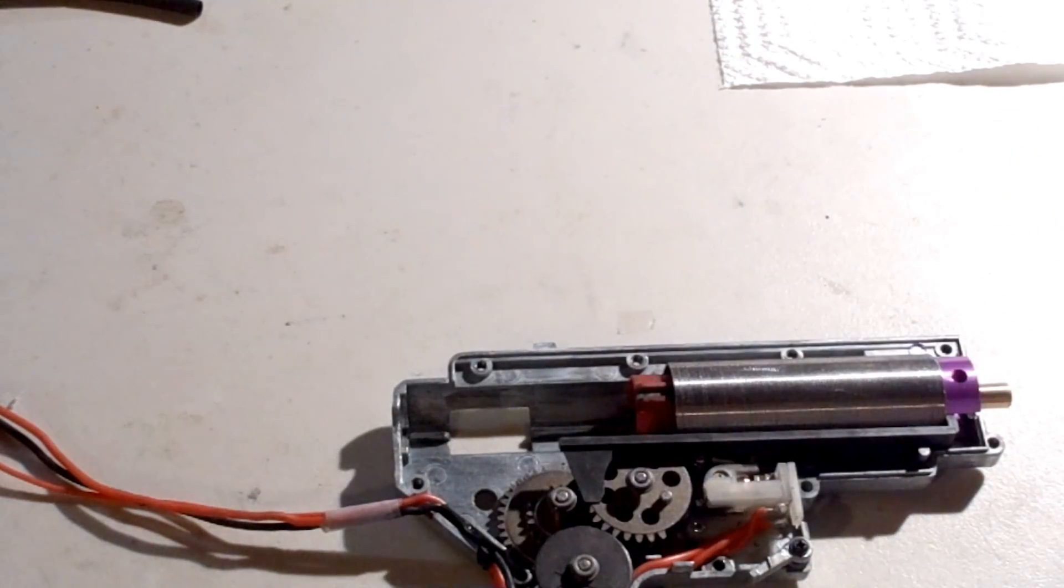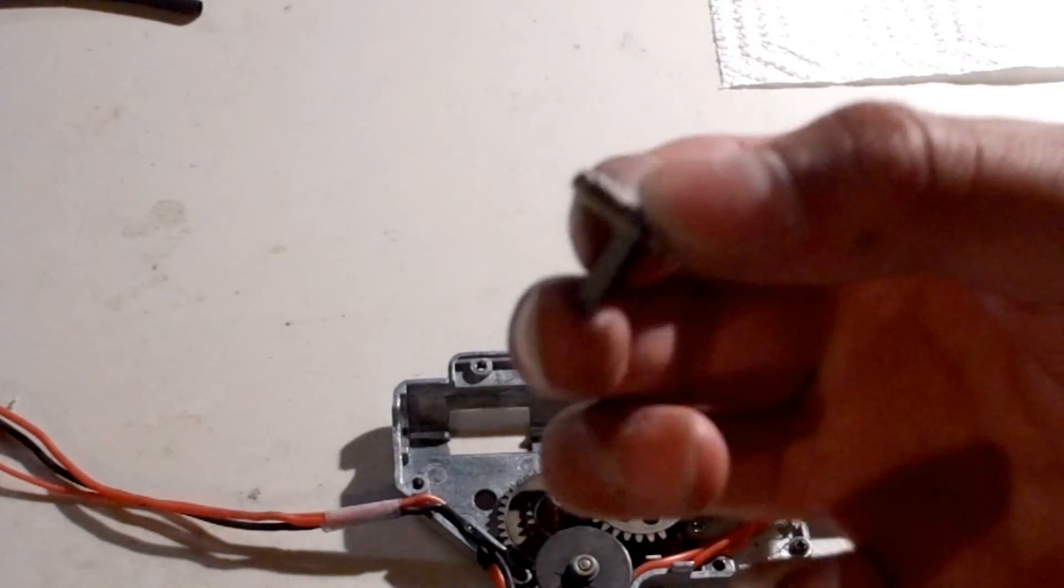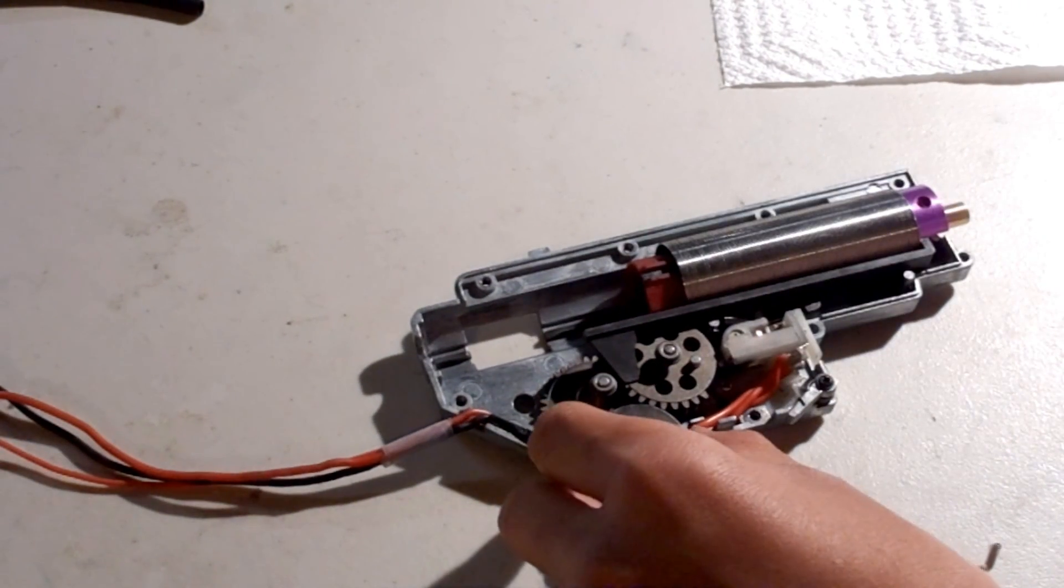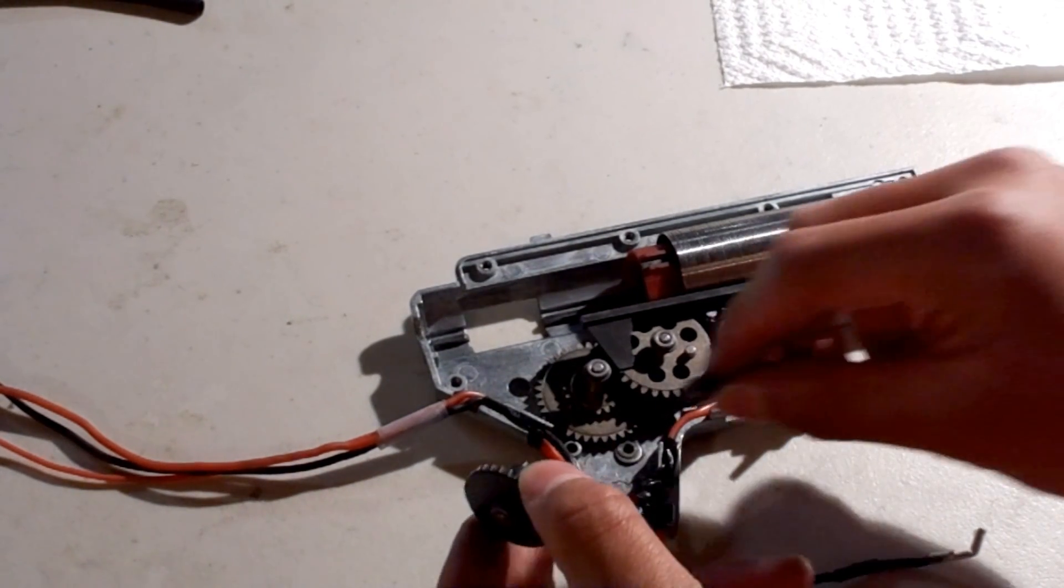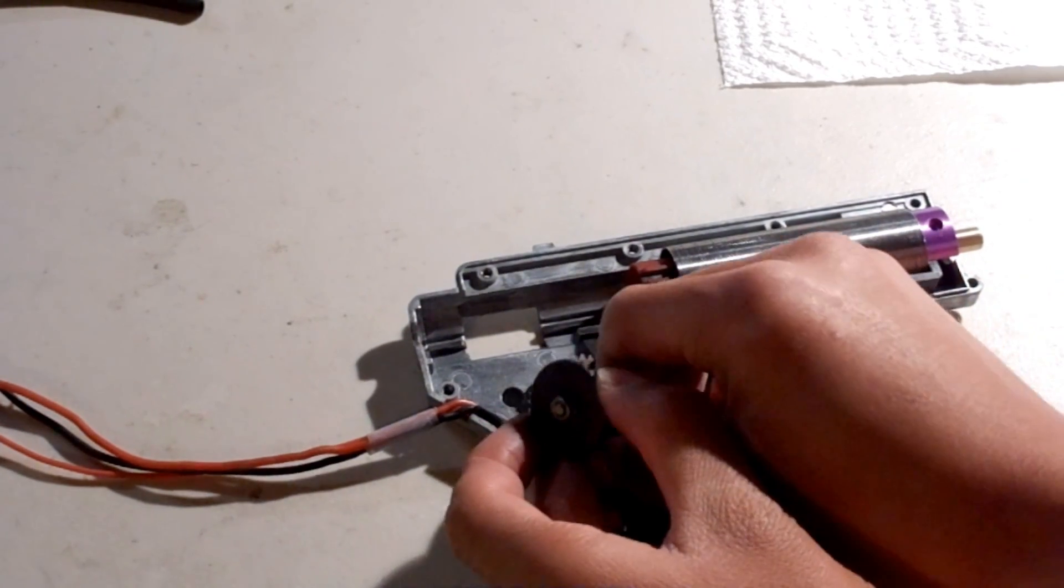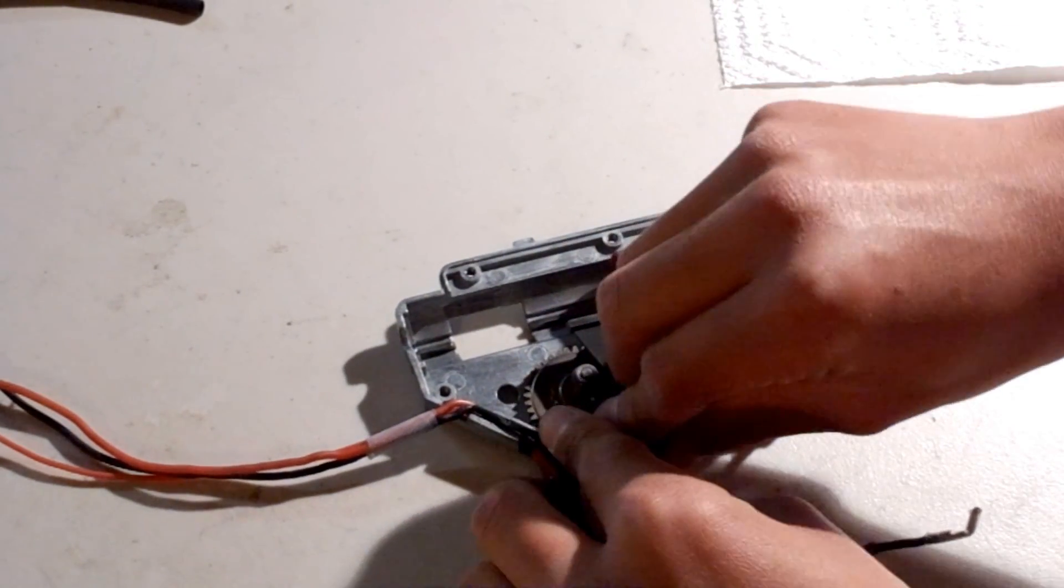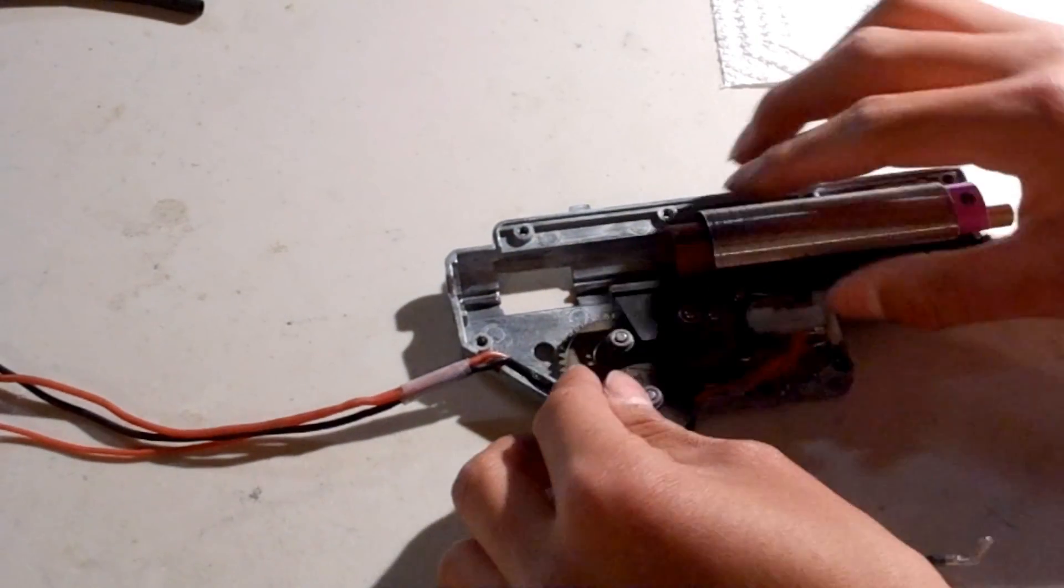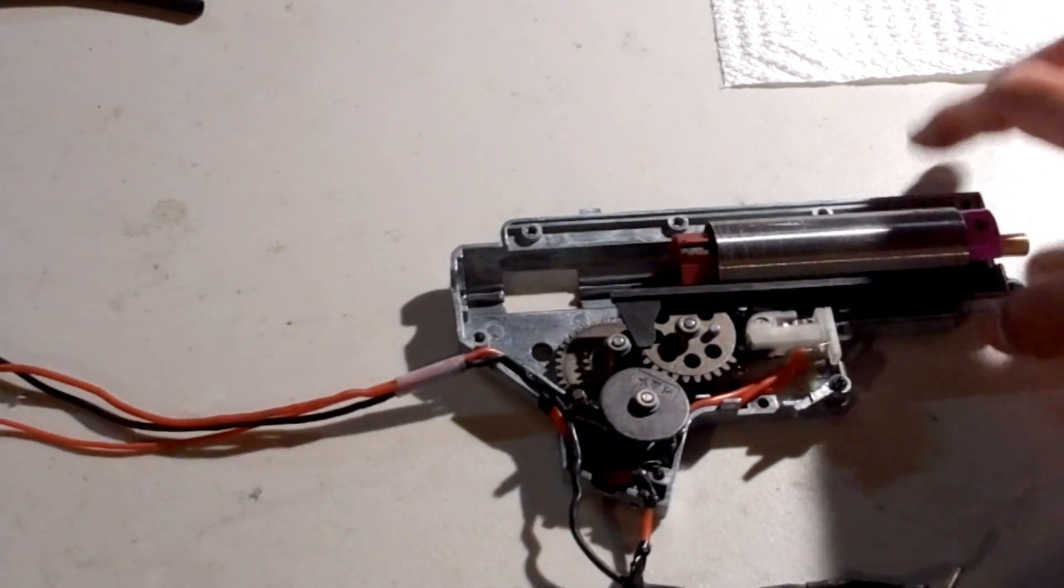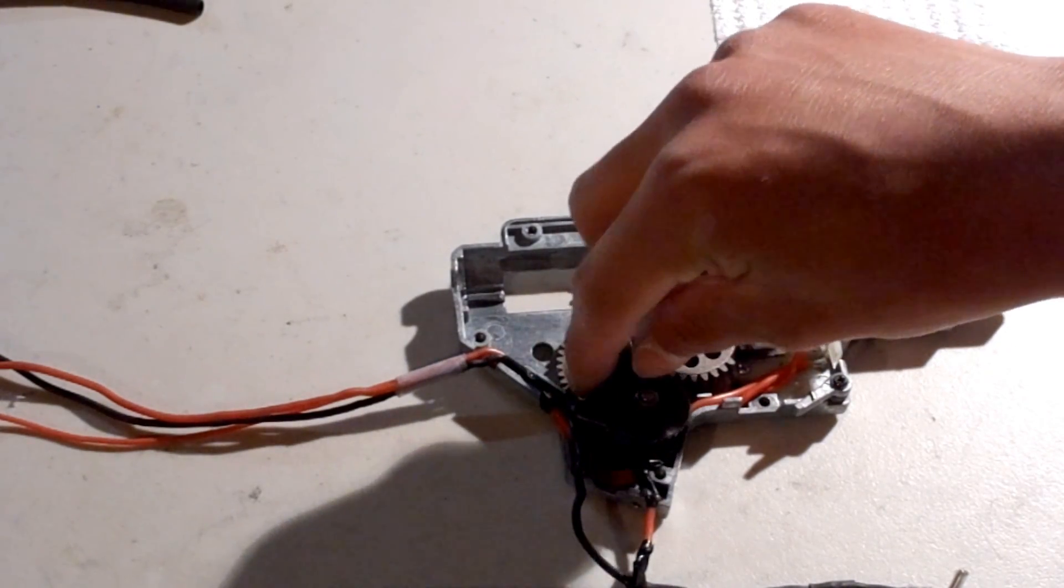Okay, now you should probably put in the anti-reversal latch. There is a little spring in it that keeps it compressed onto the bevel gear. So you should take this off, put it in this little hole, and put the bevel gear back on like so. Sometimes the anti-reversal latch will want to jump out, so I'm probably going to put some grease on it to make it stay in a bit.